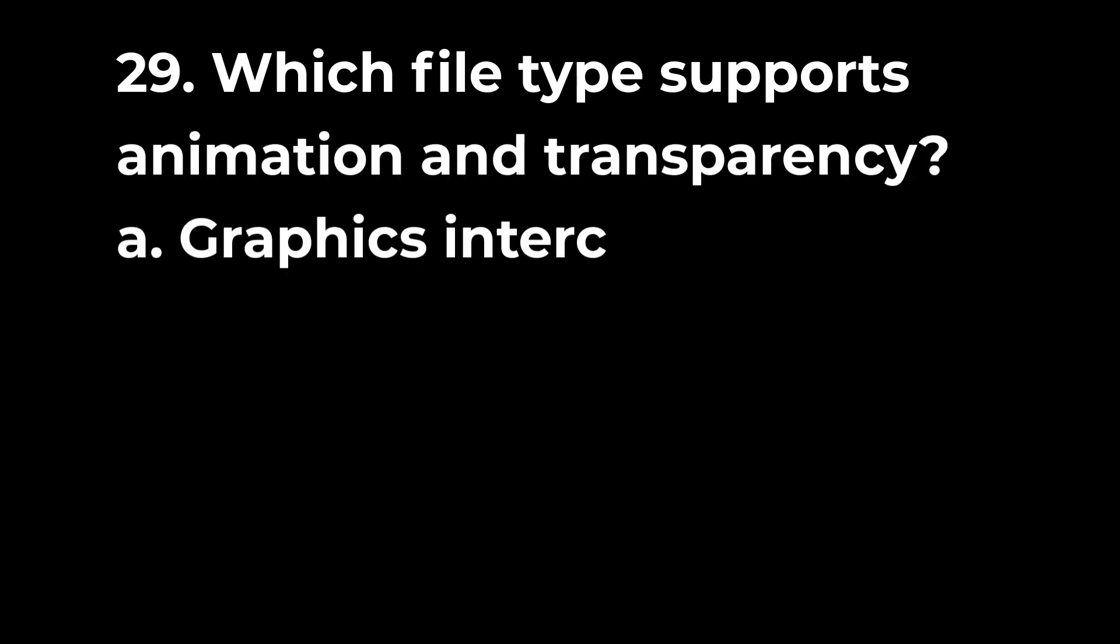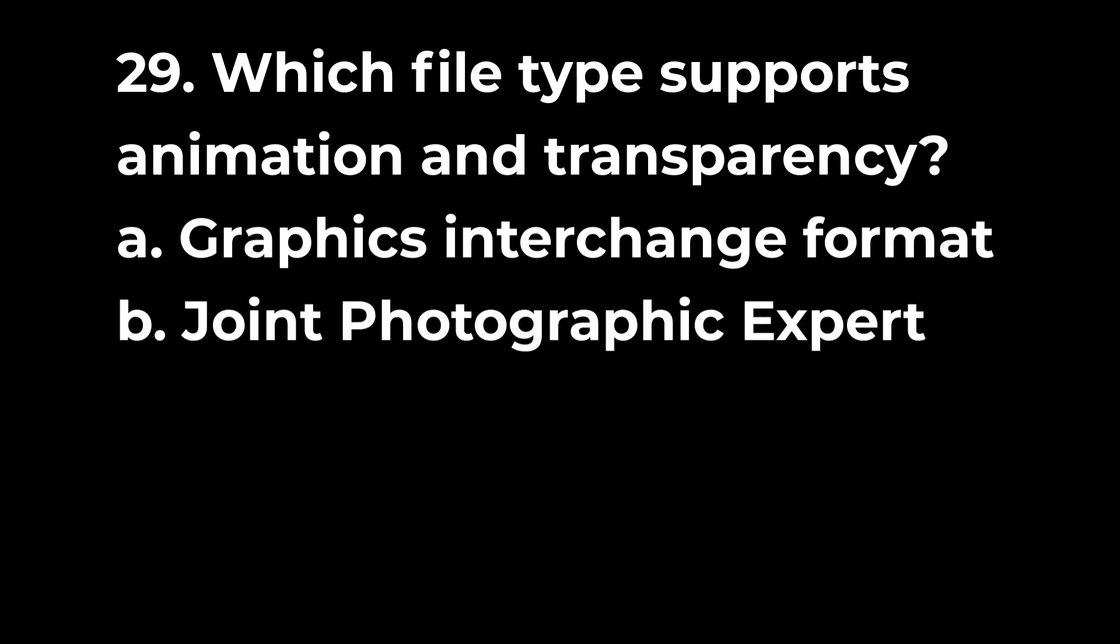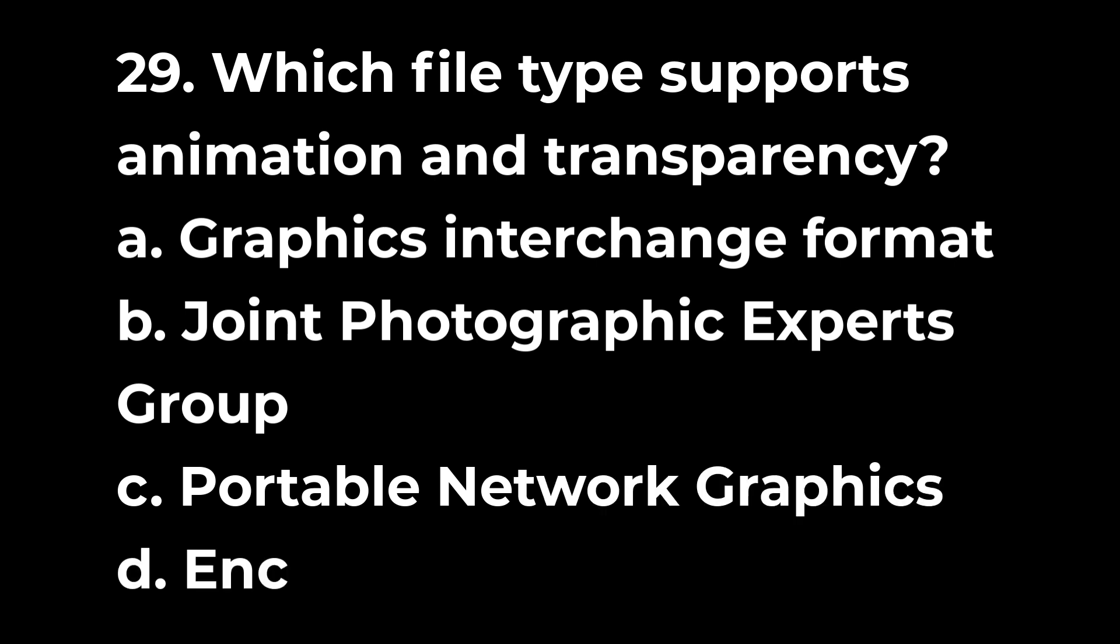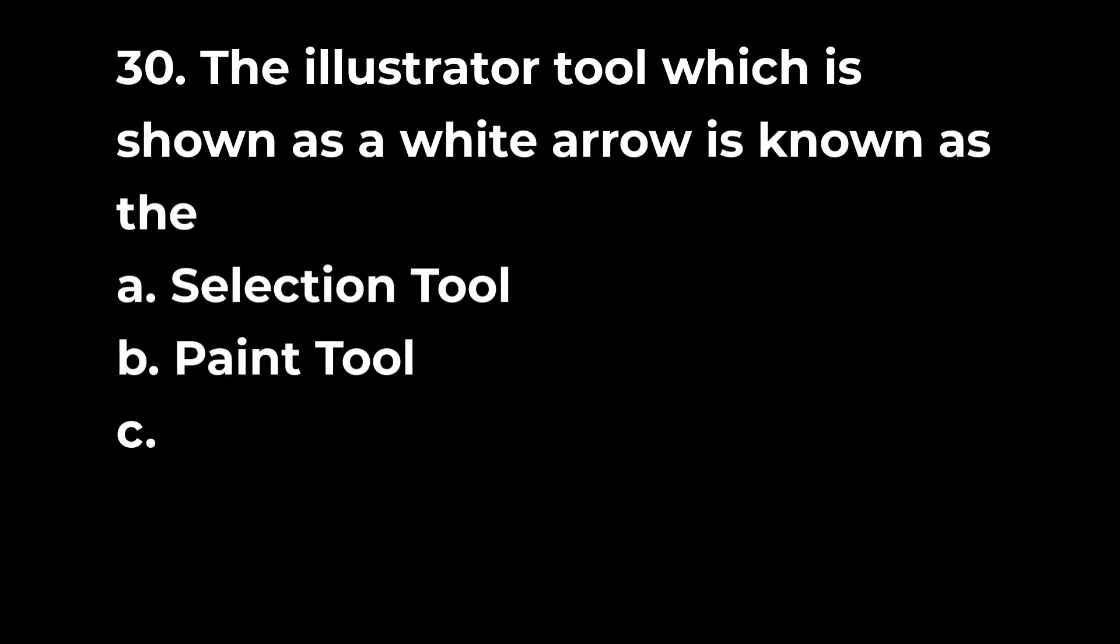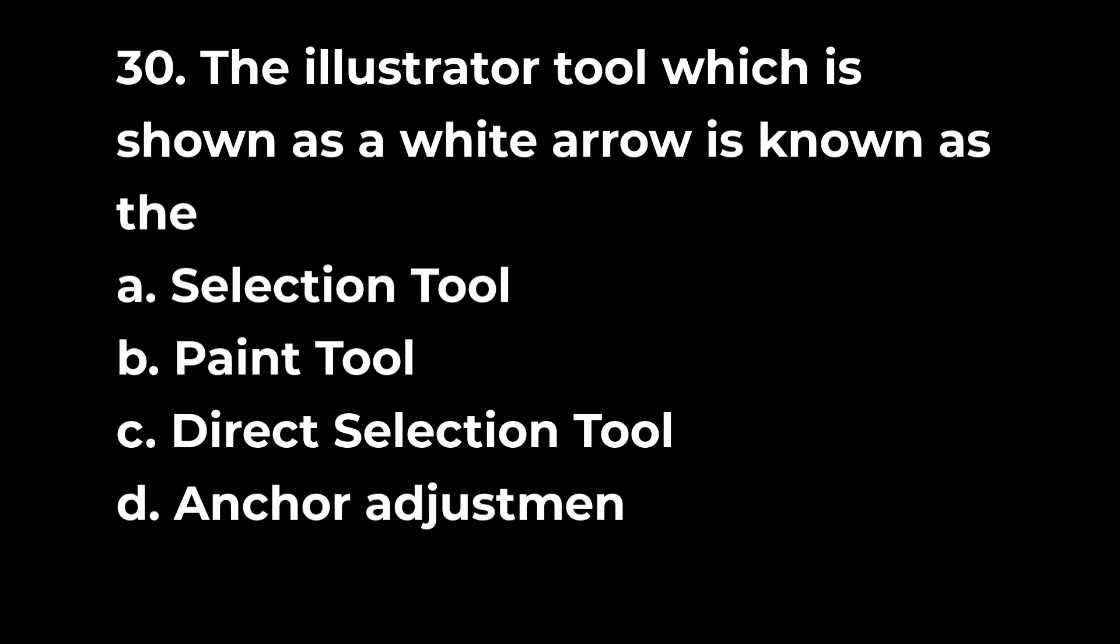Question 29: Which file type supports animation and transparency? a. Graphics interchange formats b. Joint photographic experts group c. Portable network graphics d. Encapsulated postscript. Question 30: The illustrator tool which is shown as a white arrow is known as the a. Selection tool b. Paint tool c. Direct selection tool d. Anchor adjustment tool.